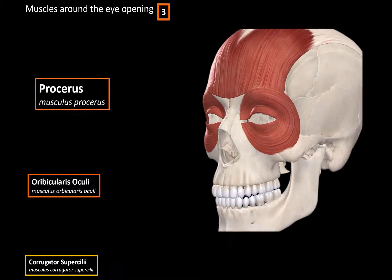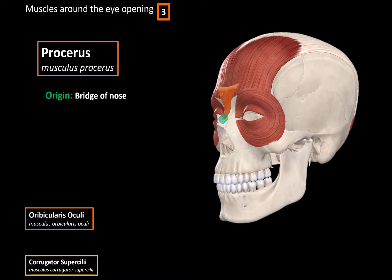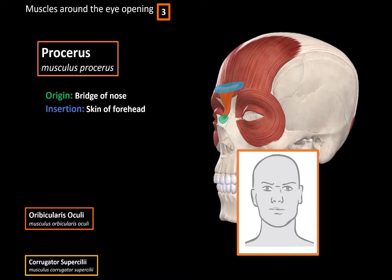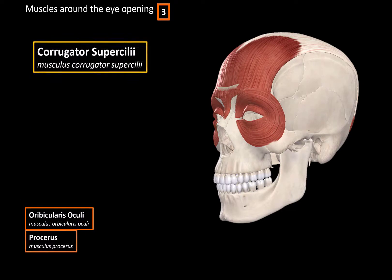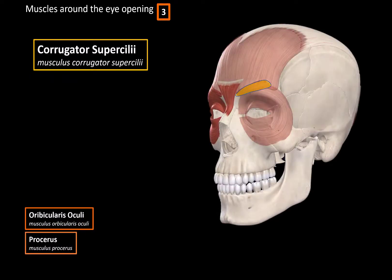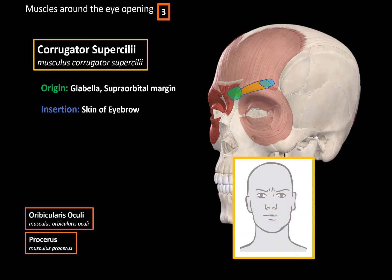Next we have the procerus muscle, located between the eyebrows. It originates from the bridge of the nose and inserts at the skin of the forehead, forming a horizontal wrinkle on the root of the nose. The last one is the corrugator supercilii, located in the eyebrows. This muscle originates from the glabella and the supraorbital margin, and inserts at the skin of the eyebrows. When it contracts, it pulls the eyebrows medially and inferiorly, forming vertical lines above the root of the nose, producing the facial expression of frowning and pain.